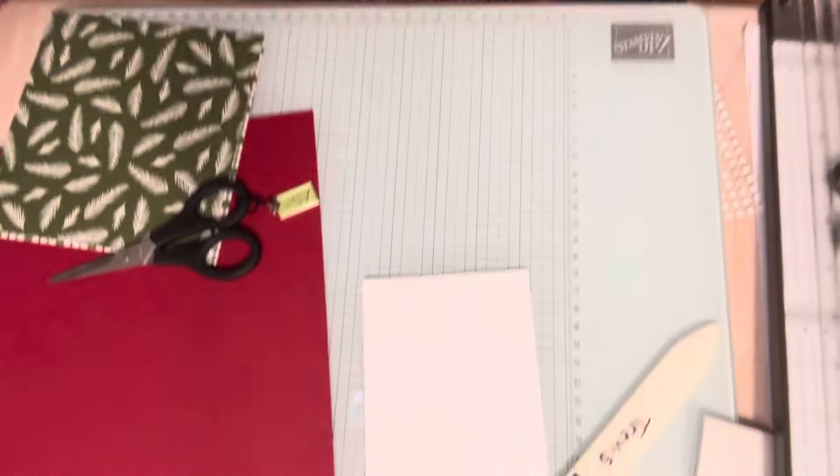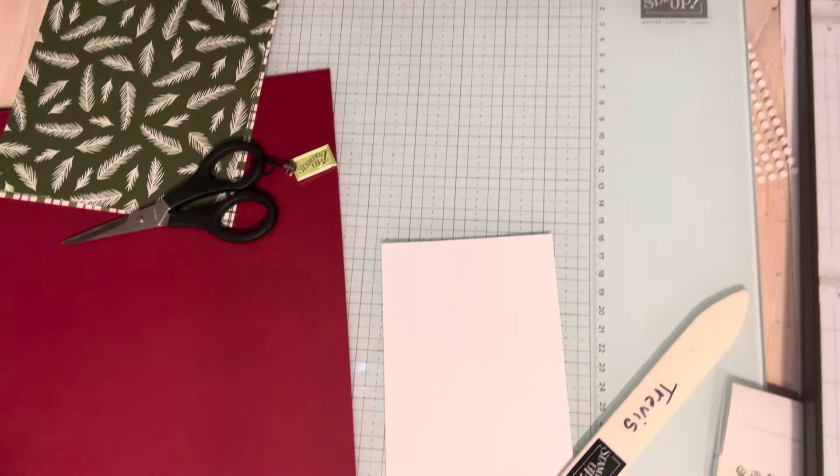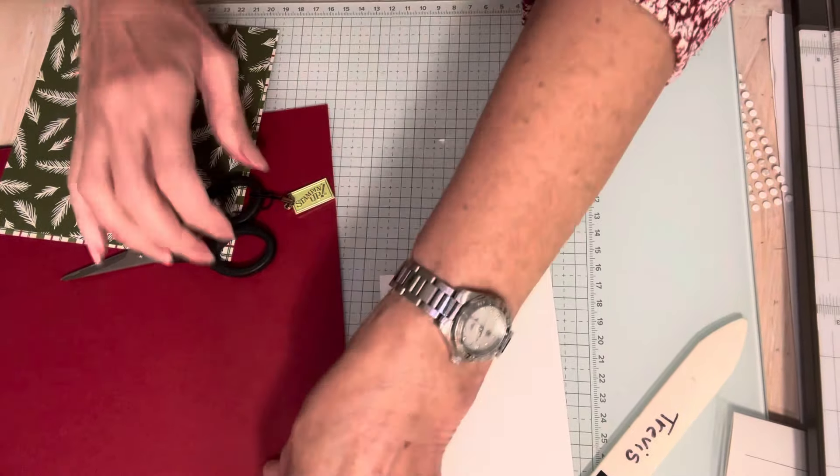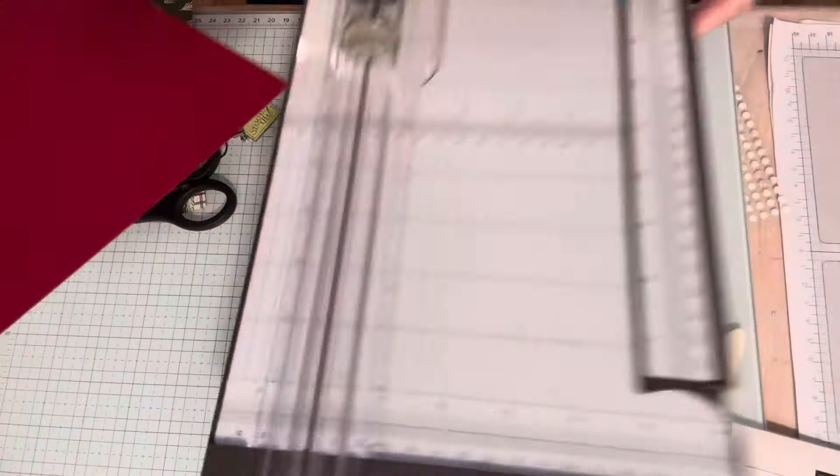So let's make this a quick card. It won't be a five minute card, but it'll be a relatively fast card. So let's get started today and thanks for watching. I'm going to be using Cherry Cobbler as my cardstock base. I'm going to cut that in half.